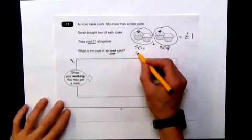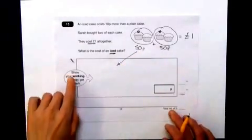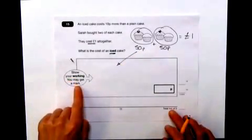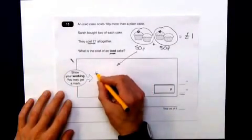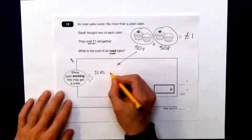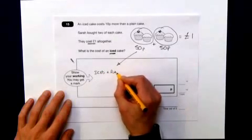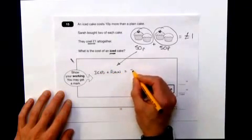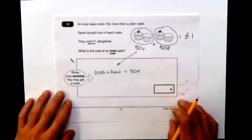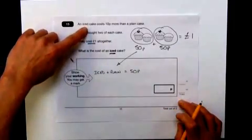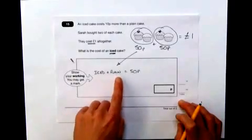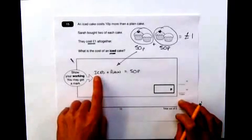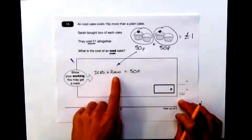So if I take part of this and put it in here, remembering it says here, show your working, you may get a mark. So it's important to try and put something in here. So I can actually say that an iced cake plus a plain cake equals 50p. Now it also tells me that the iced cake must be 10p more than the plain cake. So how can I make these equal 50p where that is 10p more than that?